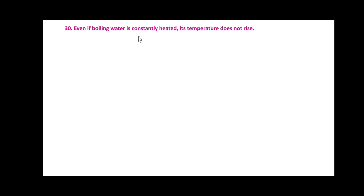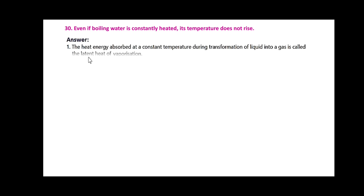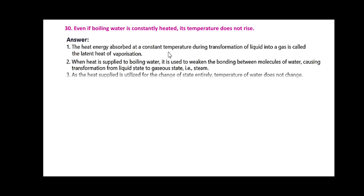Even if boiling water is constantly heated, its temperature does not rise. The heat energy absorbed at a constant temperature during transformation of liquid into a gas is called the latent heat of vaporization. When heat is supplied to boiling water, it is used to weaken the bonding between molecules of water, causing transformation from liquid state to gaseous state, i.e. steam. As the heat supplied is utilized for the change of state entirely, the temperature of water does not change.